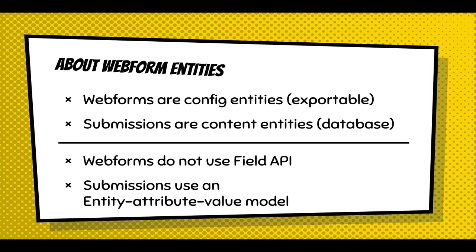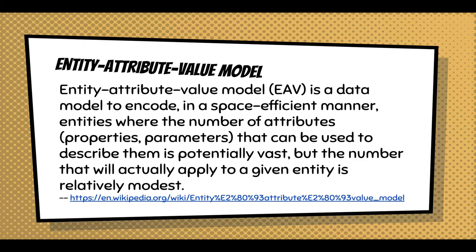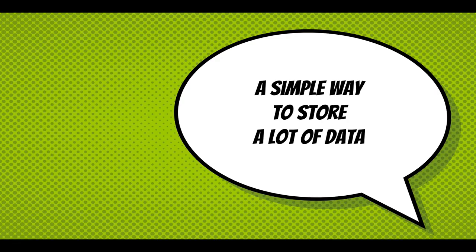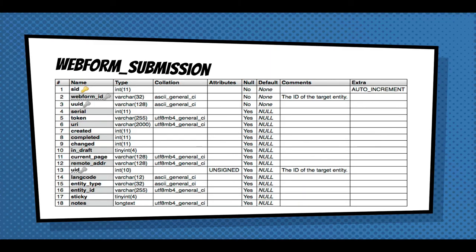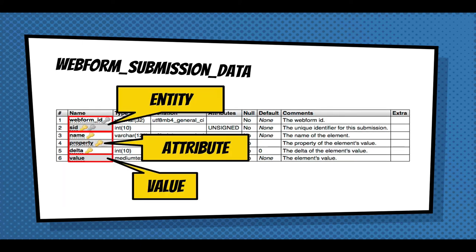Webforms are config entities — config entities are exportable and can be downloaded as a single YAML file. Submissions are content entities stored in the database. Webforms doesn't use the Field API because submissions use an entity attribute value model — a simple way to store a lot of data. Looking at the database, the submission table defines all properties of a submission. The EAV model's first part is webform ID and submission ID defining the entity; the attribute is the element name and property; delta stores multiples; and finally the value. This single table design stores all data coming into the webform module.